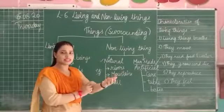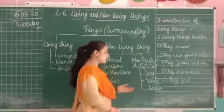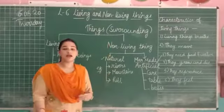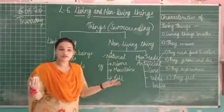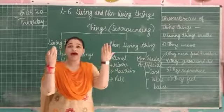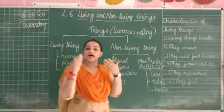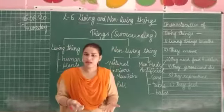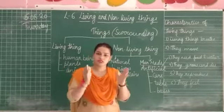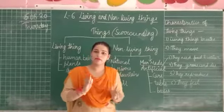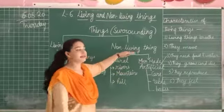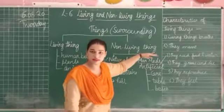Let's take a few examples of man-made non-living things: cars, tables, buses, chairs, fans, and electrical appliances. Anything which is made by man comes under the category of non-living things.